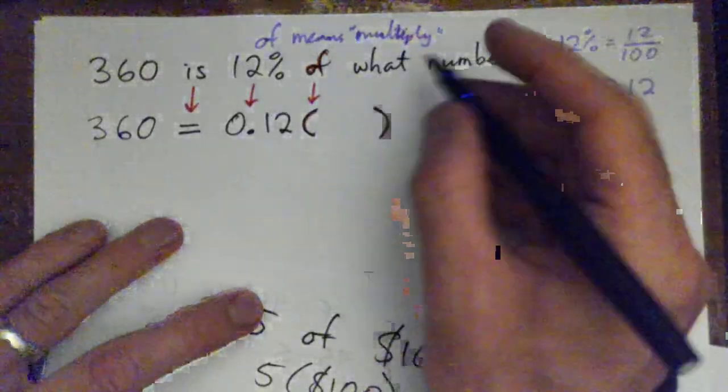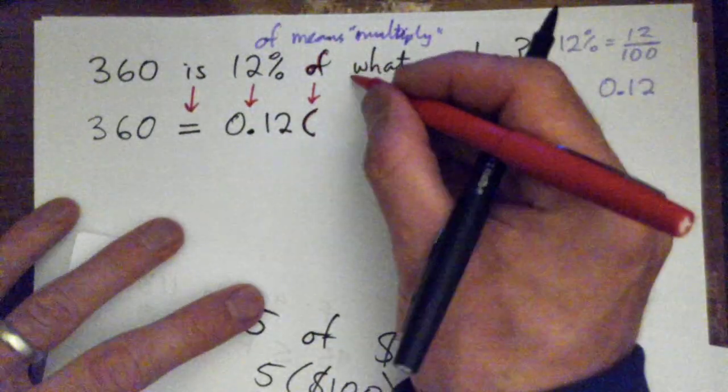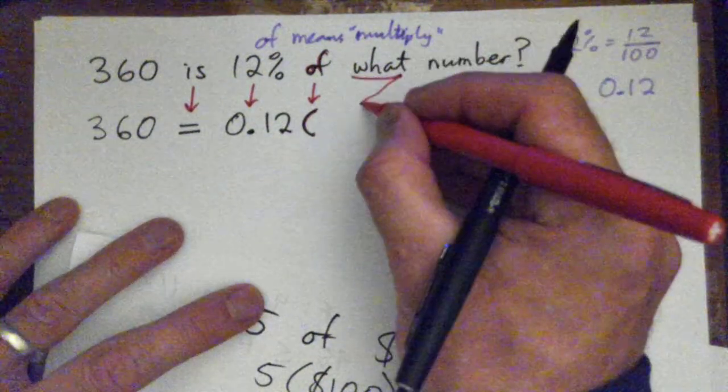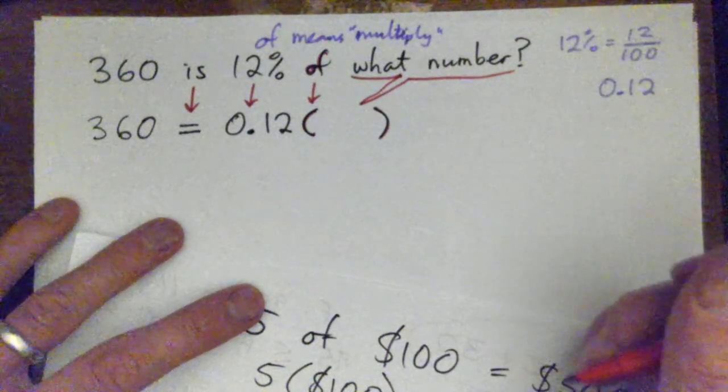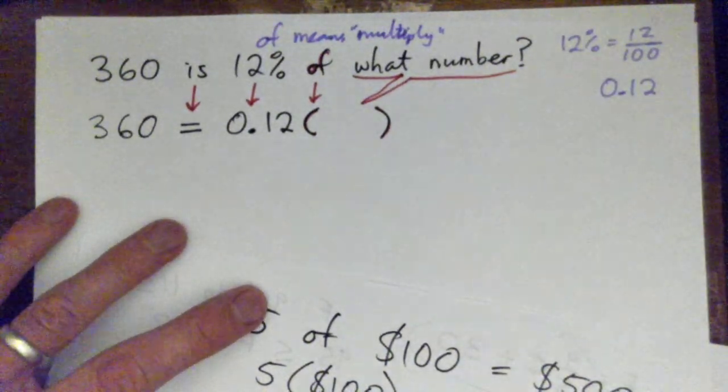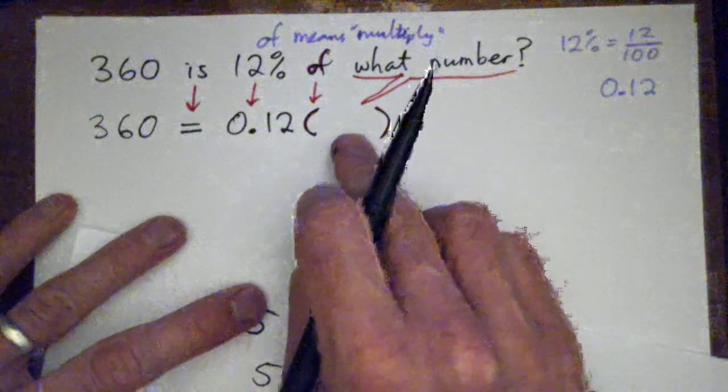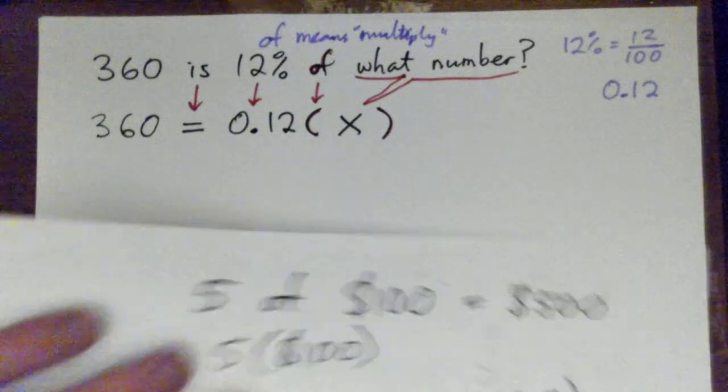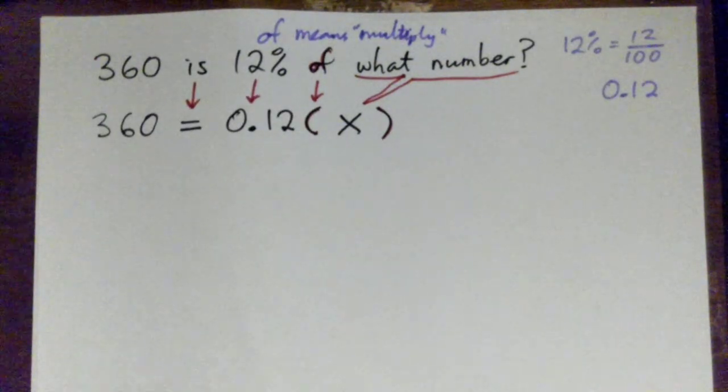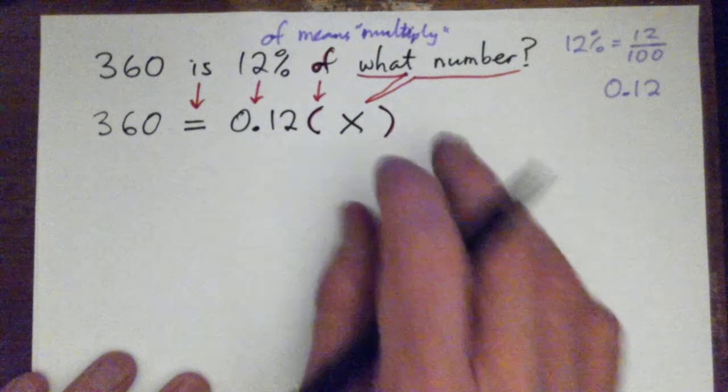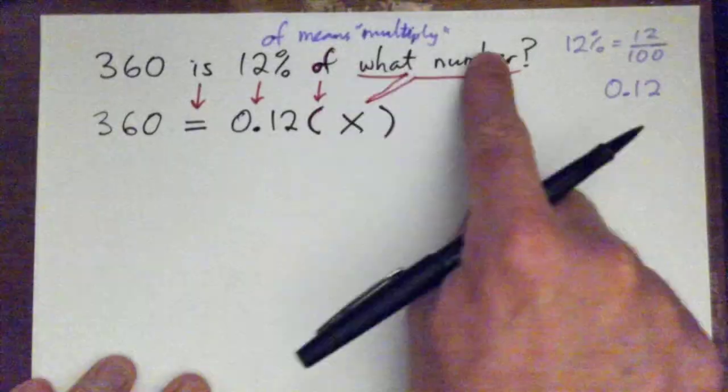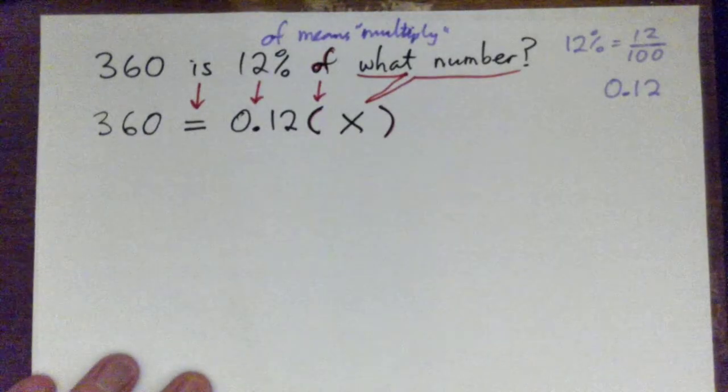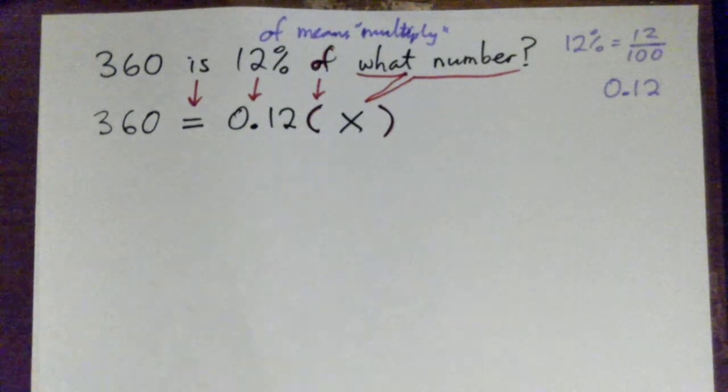So 'what number' then we convert - 'what number' is the unknown number. And for an unknown number in algebra we usually use a letter, and you can use any letter you want. I'm just going to use X because we use X a lot and you're familiar with it, but you could use anything like ABCDE, doesn't matter. So the sentence becomes 360 equals 0.12 times X, times X. Okay, alright.